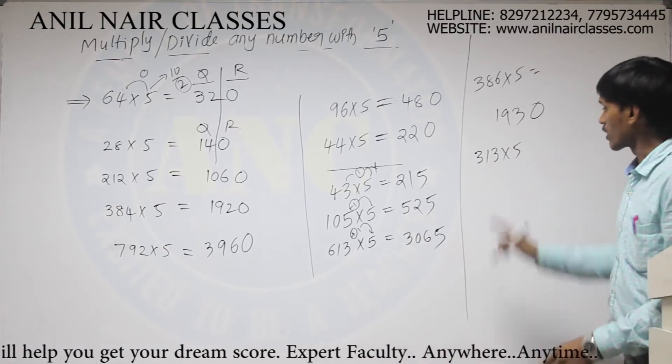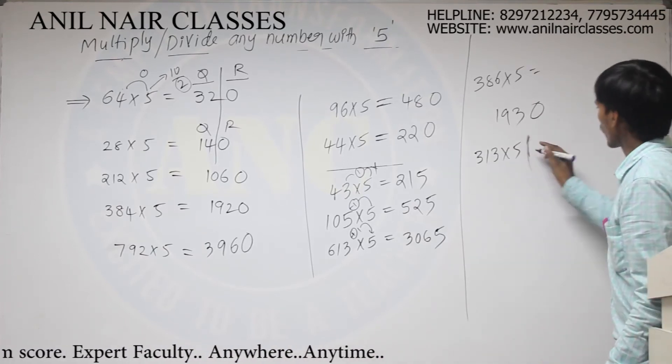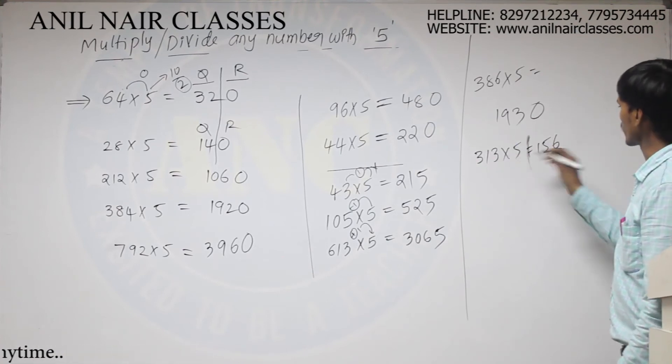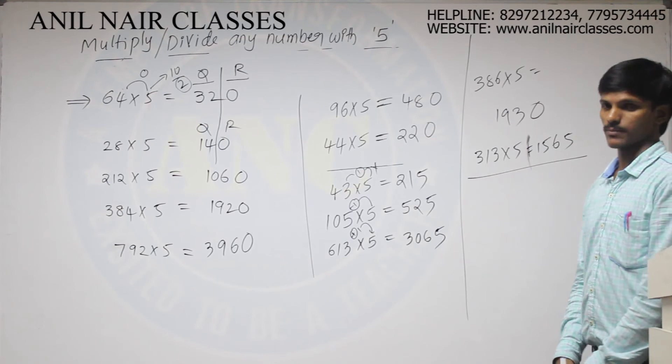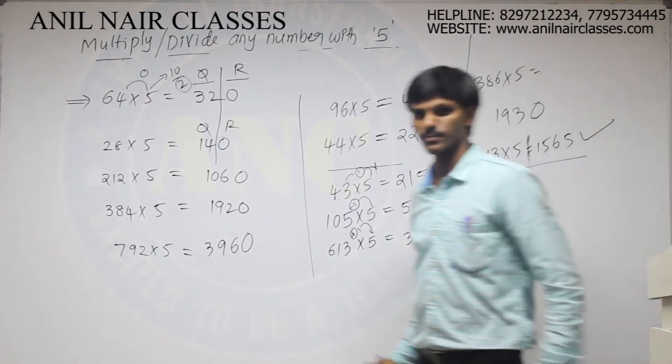Half of 312 will be 156. 1 is the remainder, 5 into 1 now, 5. So 1565 will be the answer. Yes, let us know. Thank you.